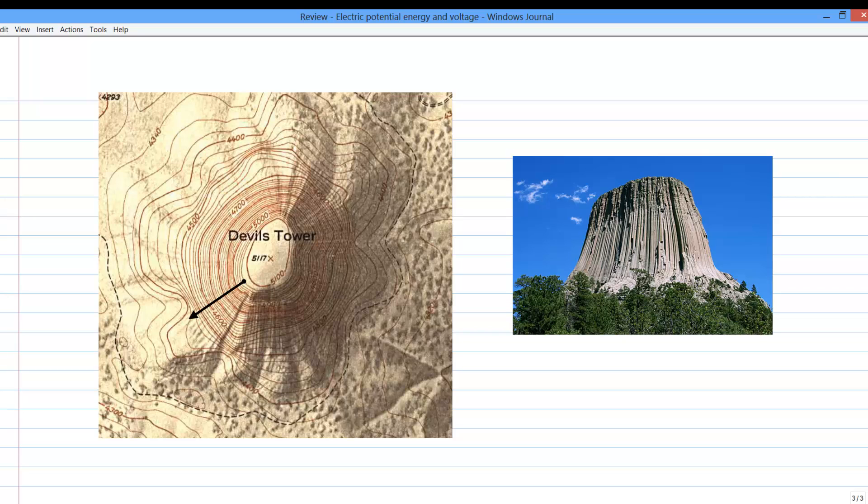Downhill and uphill are perpendicular to the contour lines, and closely spaced lines mean steep hills.